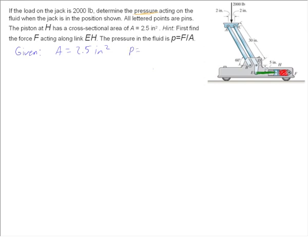That's shown in the picture, and we're given that they're all pins, and we're given that P equals F-E-H over area. We're supposed to find P, which is really finding F-E-H. So let's go ahead and get started.